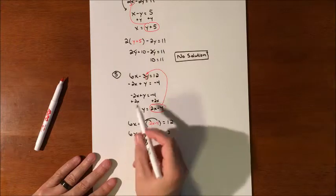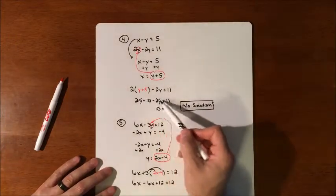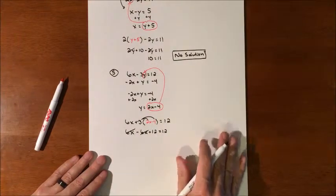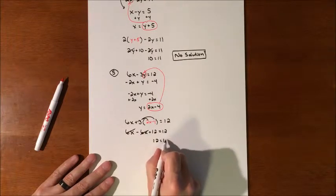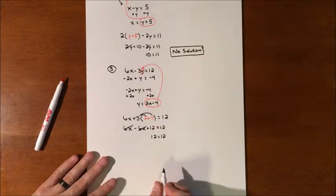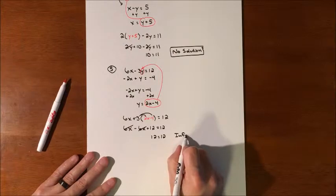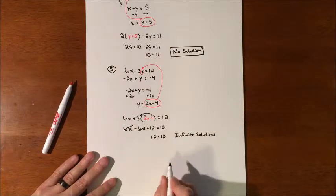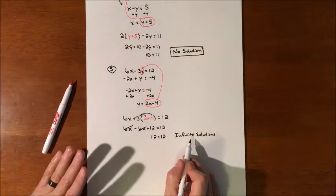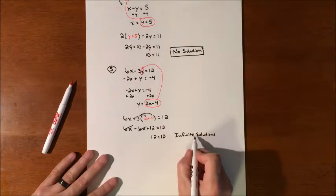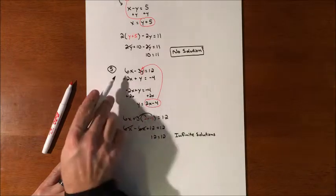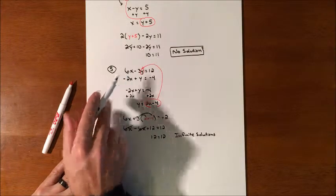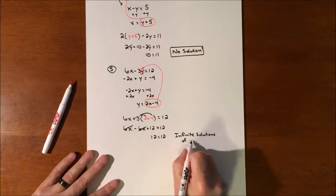A similar situation happens — the variable cancels. That gives us 12 equals 12, which is always true, so this is an infinite solution. Infinite solutions means the two equations represent the same line. You have to specify a solution that works: it's infinite solutions based on all the points on this line. Since they're the same line, any point that works for one equation works for the other.